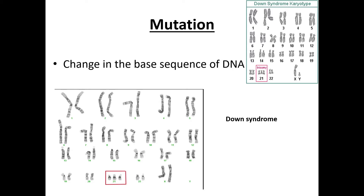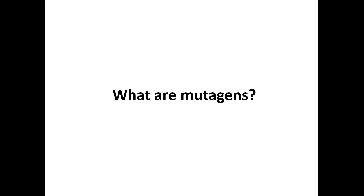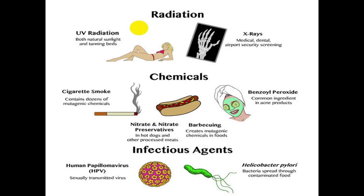Mutation is basically the change in the base sequence of DNA, or a genetic change, where a new allele is formed. Ionising radiation and some chemicals can increase the rate of mutation. One example is Down syndrome. Mutagens can be caused by radiation, chemicals, or infectious agents.